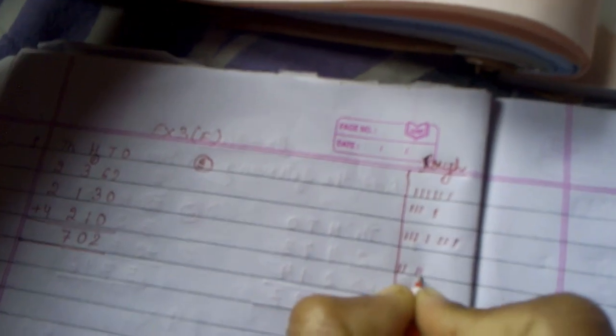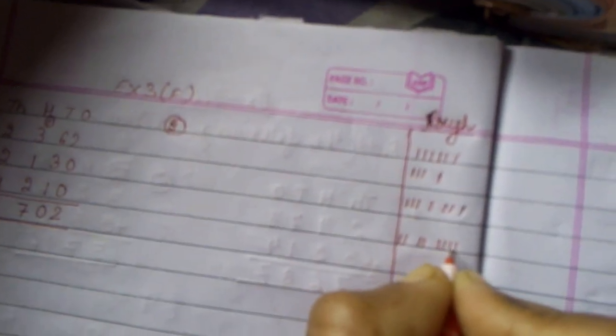Now this one for 1000 place. 2, 2, and 4. 1, 2, 3, 4, 5, 6, 7, 8. So this is the answer, that is 8702. Question number 2.